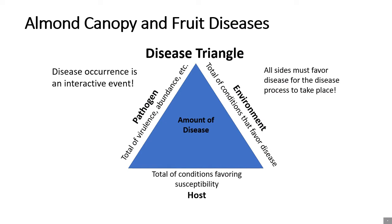As with any good pathology talk, when discussing diseases we have to start with the disease triangle. The disease triangle is an attempt to help us visualize that disease occurrence is an interactive event. To have disease we have to have three major influencers: the pathogen, the host, and the environment. These make up the three sides of the triangle.